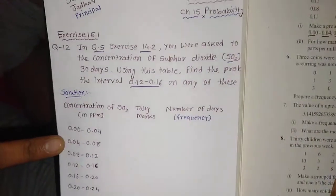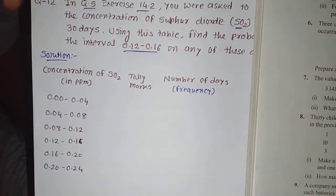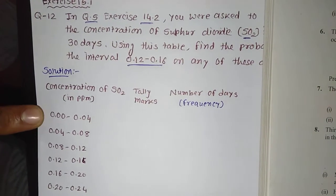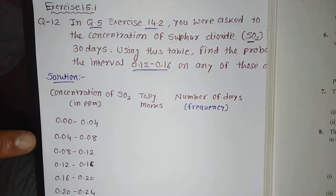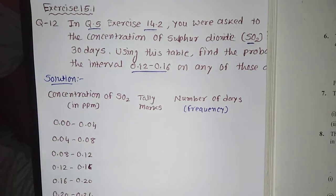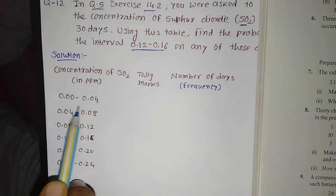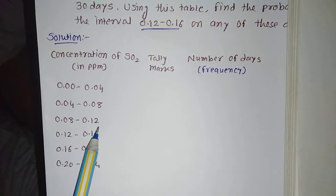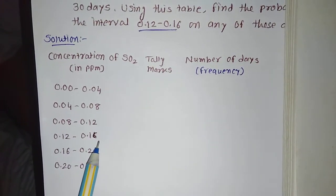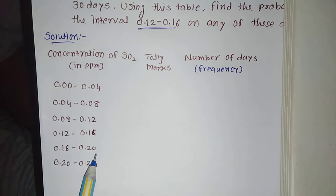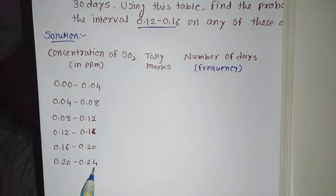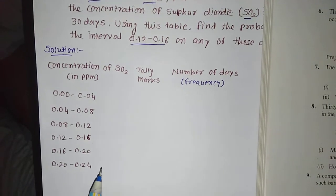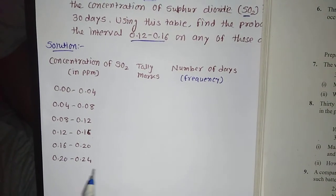First of all focus here. We need to prepare a table using groups: 0.00 to 0.04, 0.04 to 0.08. The gap is 0.04. So next will be 0.08 to 0.12, then 0.12 to 0.16, 0.16 to 0.20, and 0.20 to 0.24 — as the last data value can be covered in this group.